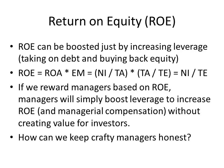The formula for ROA is net income over total assets, and the formula for equity multiplier is total assets divided by total equity. If we multiply these together, we can see that total assets cancel out, leaving us net income over total equity, which is in fact ROE.